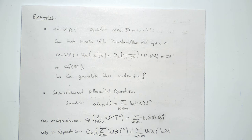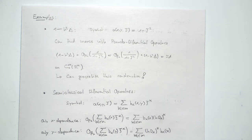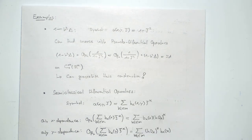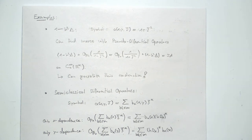More generally, we can consider semi-classical differential operators where the symbols are polynomials in Xi with coefficient functions b_alpha. If we only have x-dependence in the coefficient functions, the pseudo-differential operator acts on functions by first differentiating alpha times and then multiplying by the coefficient functions.